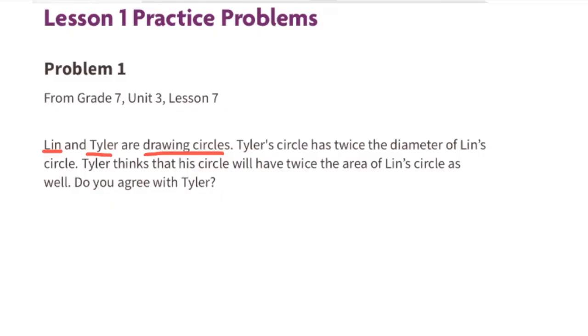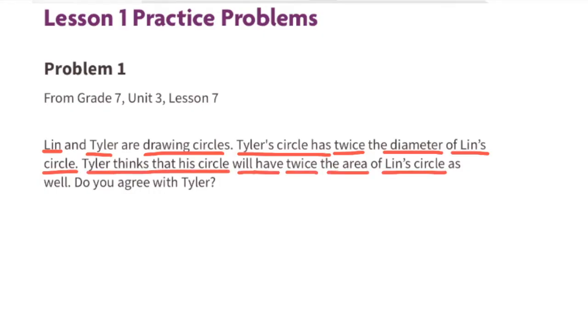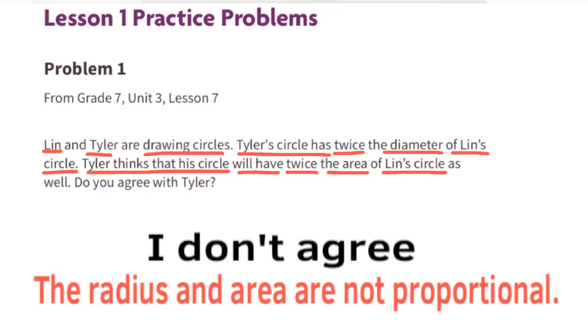Seventh grade Open Up Resources Illustrative Mathematics, Unit 6, Lesson 1, Relationships Between Quantities, Problem Number 1. From seventh grade Unit 3, Lesson 7: Lynn and Tyler are drawing circles. Tyler's circle has twice the diameter of Lynn's circle. Tyler thinks his circle will have twice the area of Lynn's circle as well. Do you agree with Tyler? I don't agree.